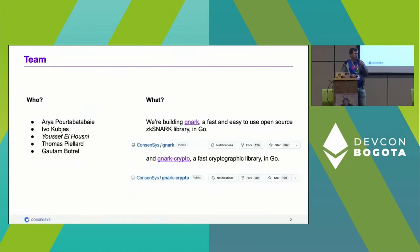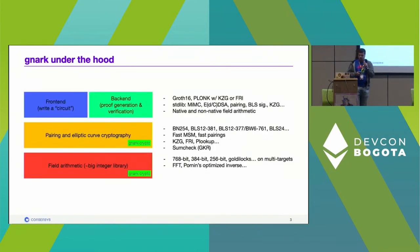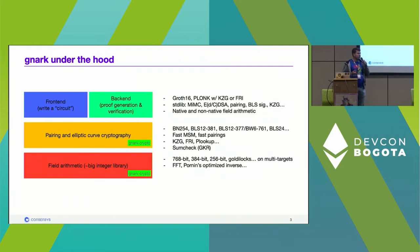gnark under the hood is basically composed of these components: you have a front-end where you write your circuit, a back-end for proof generation and proof verification, and underneath you have the gnark-crypto library which covers pairing-based cryptography, elliptic curve-based cryptography, and finite field arithmetic. All of this is written in Go with no dependencies.